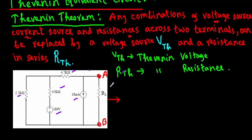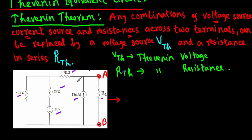Thevenin theorem implies that if we have a big circuit containing multiple resistances, an independent voltage source and an independent current source, we can convert this whole circuit into a single voltage source and a single resistor.